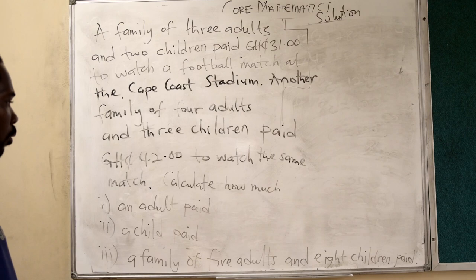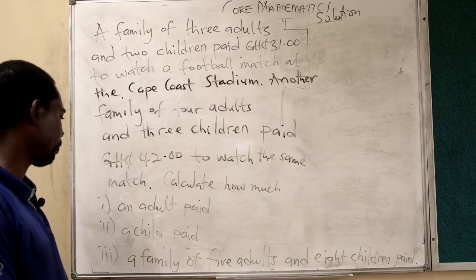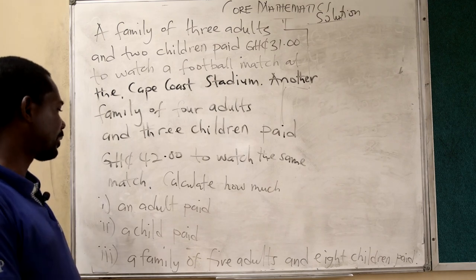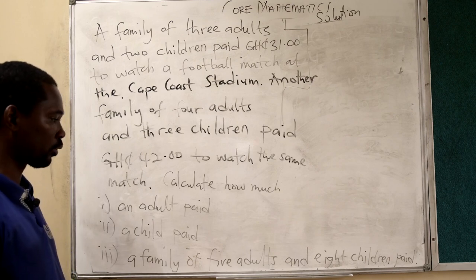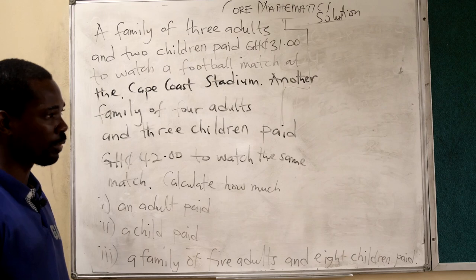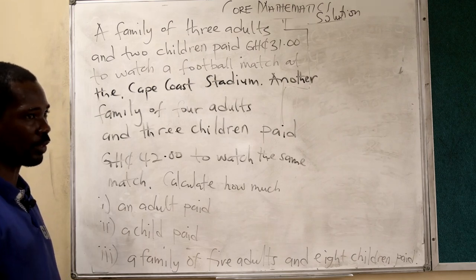You have to calculate how much an adult paid, how much a child paid, and how much a family of five adults and eight children paid. So this is the question.